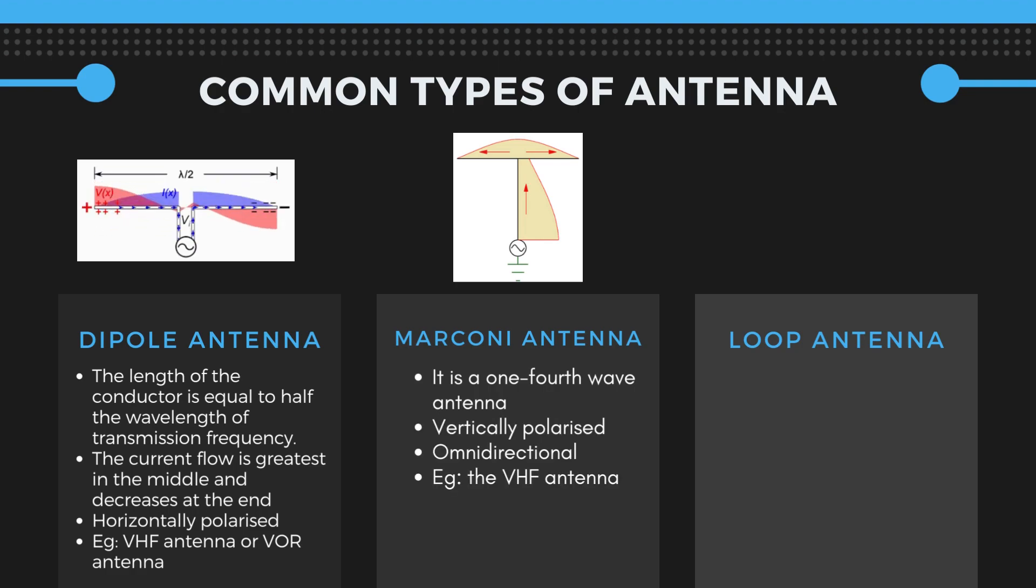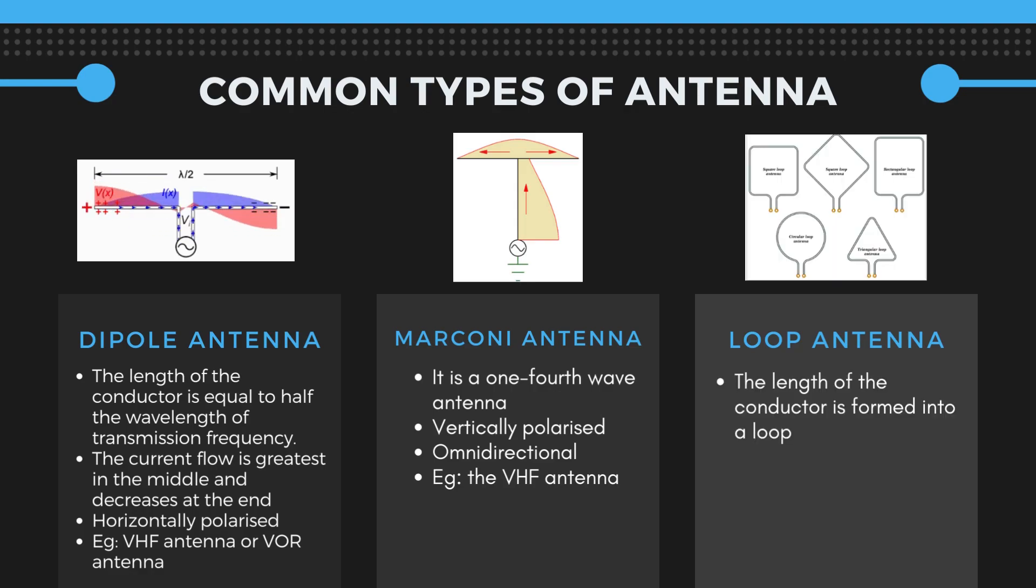Last but not the least, in the loop antenna, when the length of the conductor is formed into a loop, its characteristics are altered from straight half wavelength antenna. This become highly direction sensitive and the broadcast causes equal current flow in both the sides of the loop, whereas the polarity is opposite to each other.